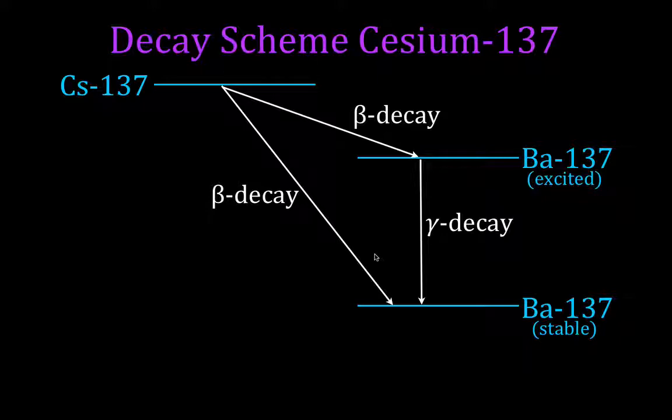One is you go right from cesium-137 to barium-137 through beta decay, and then you have an intermediate step where you still have beta decay, but then you have an excited state of barium-137, and then you have further gamma decay, and you still end up with stable barium-137.